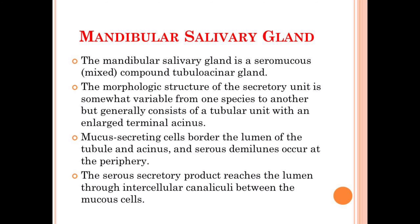The secretions of the mandibular salivary gland are a mixture of serous plus mucus secretory products, and structurally it is a compound tubular acinar gland — a gland having branching tubules which end in secretory acini. Secretory acini are rounded secretory units present in the salivary gland. Another characteristic morphological structure of the mandibular salivary gland is that the secretory units are somewhat variable in structure from one species to another, but they consist of a tubular unit with an enlarged terminal acinus.